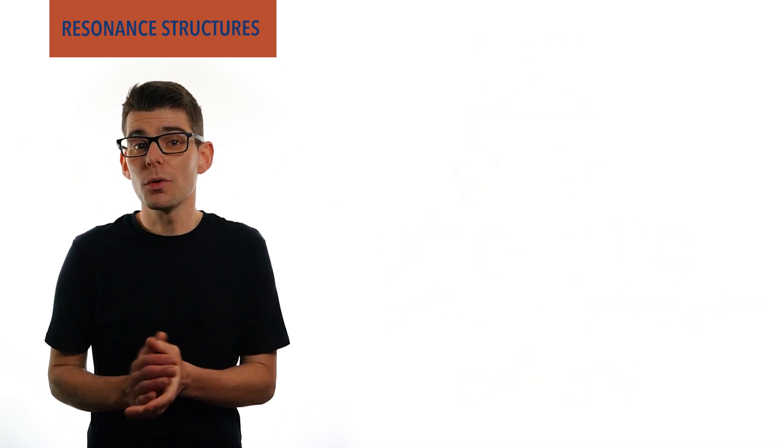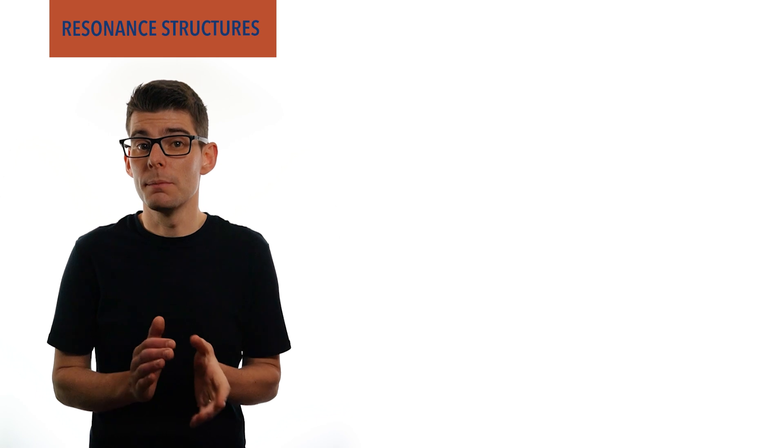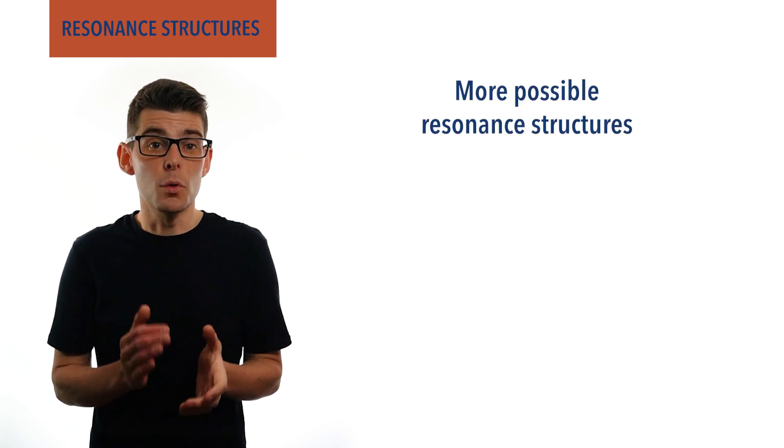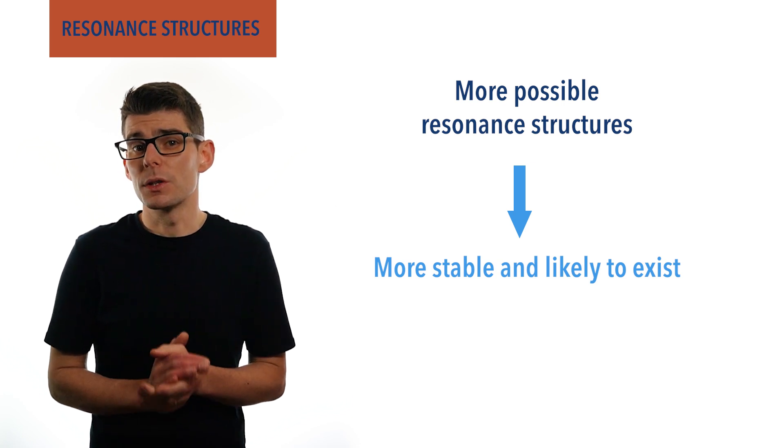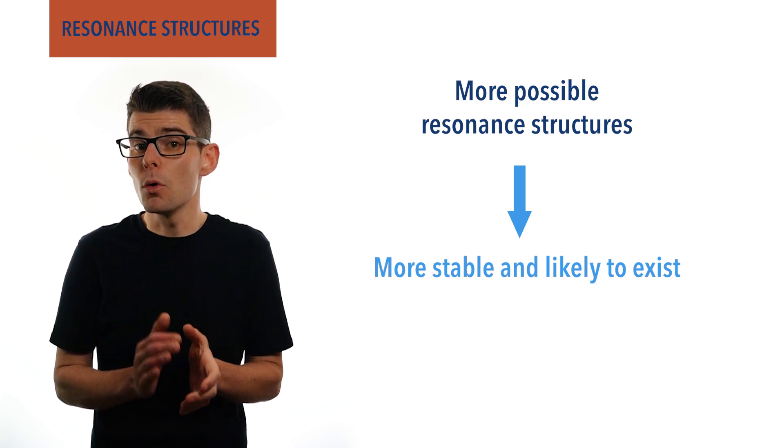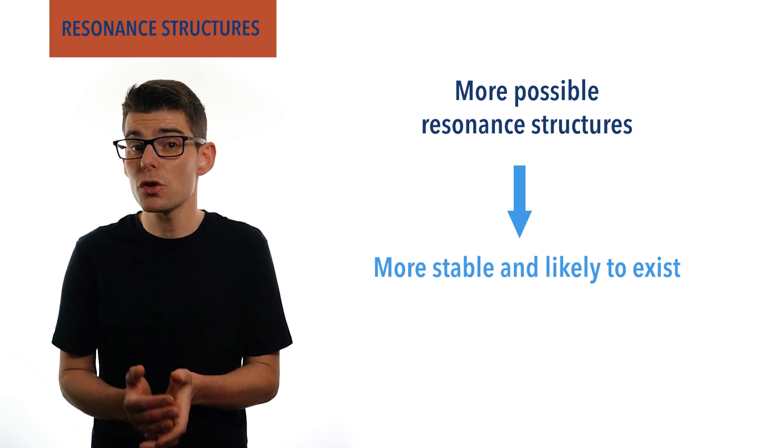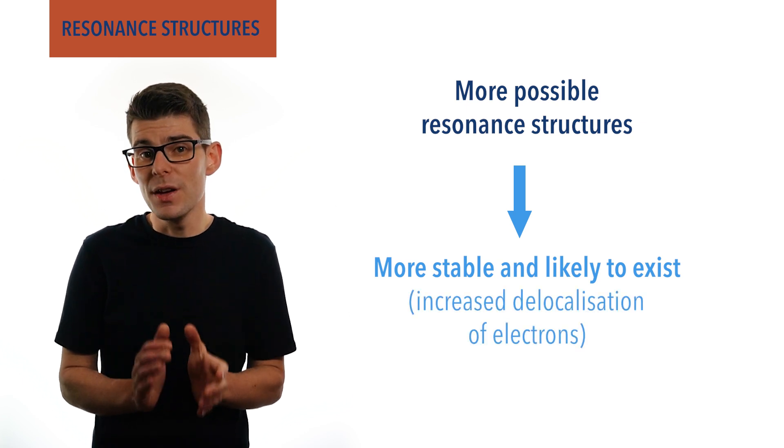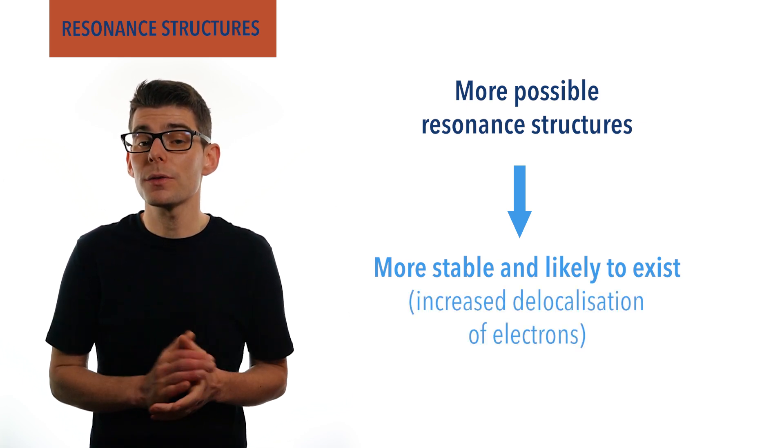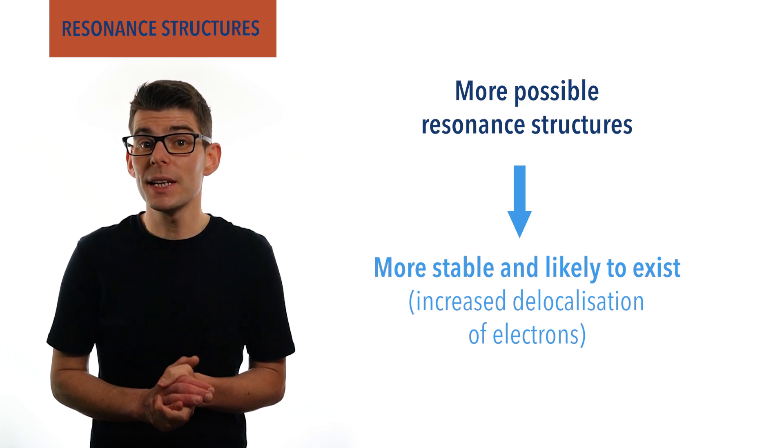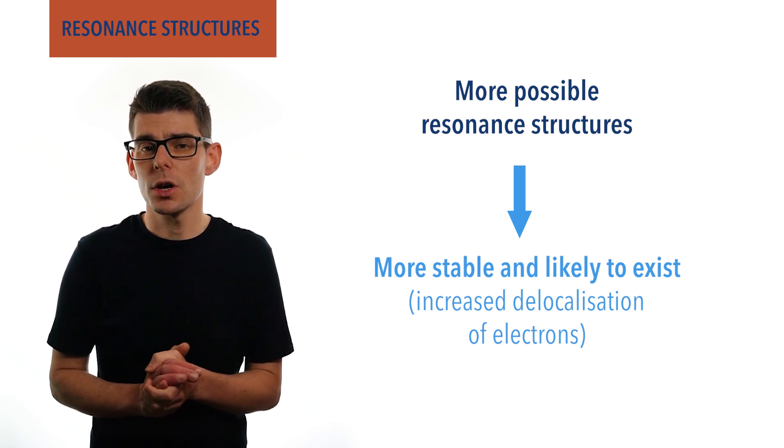Now, in general, the more resonant structures a molecule or ion has, the more stable it is and the more likely it is to exist. This is because more resonant structures means more possible delocalization of electrons. This enables electron density to be spread out throughout the whole molecule or ion, reducing instability caused by localized charges.